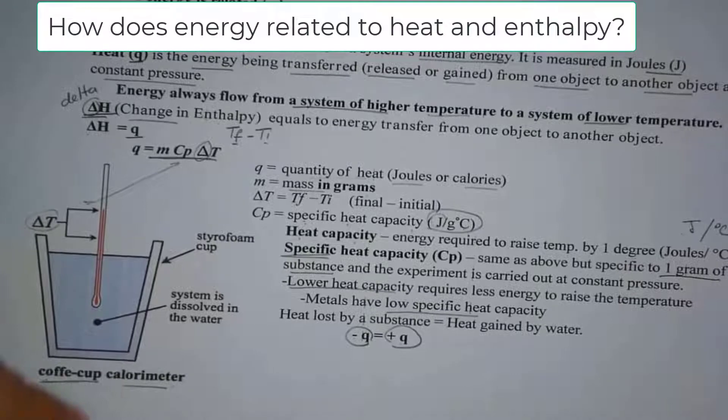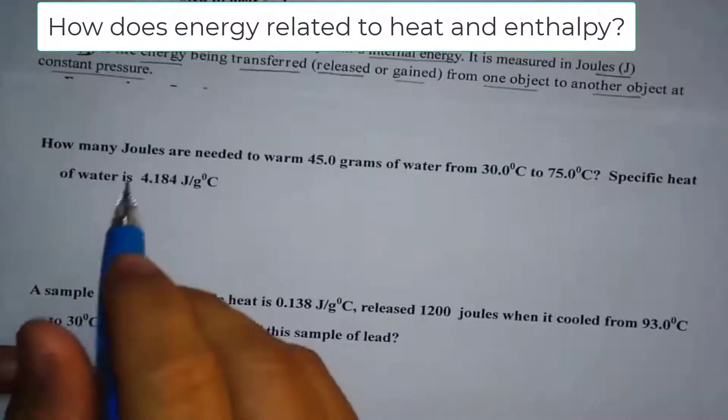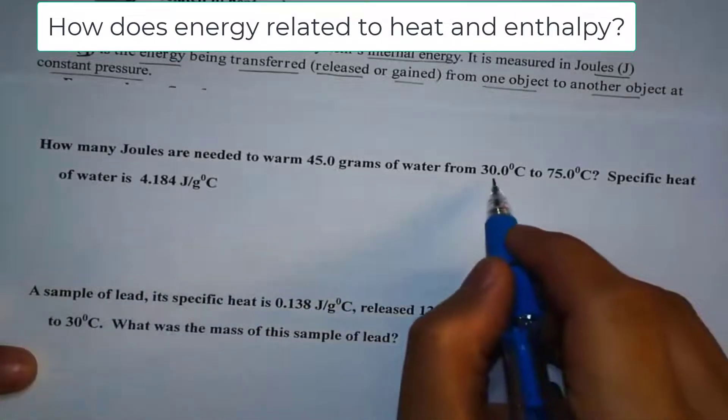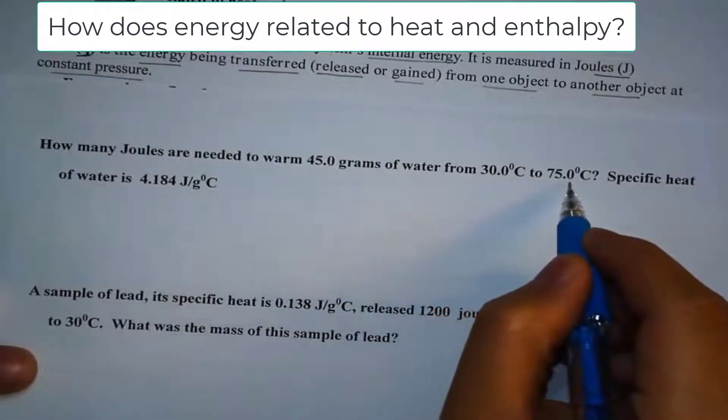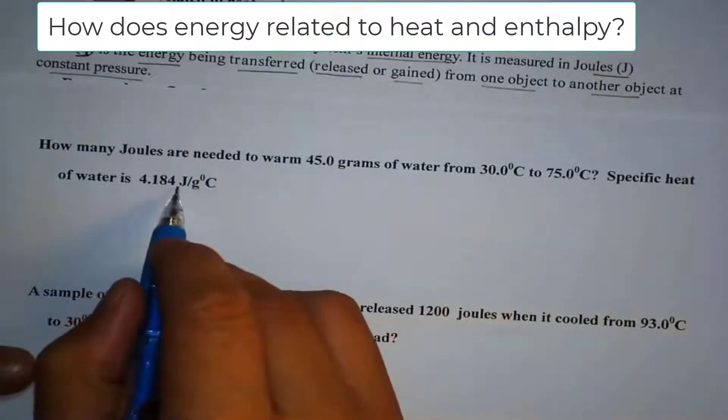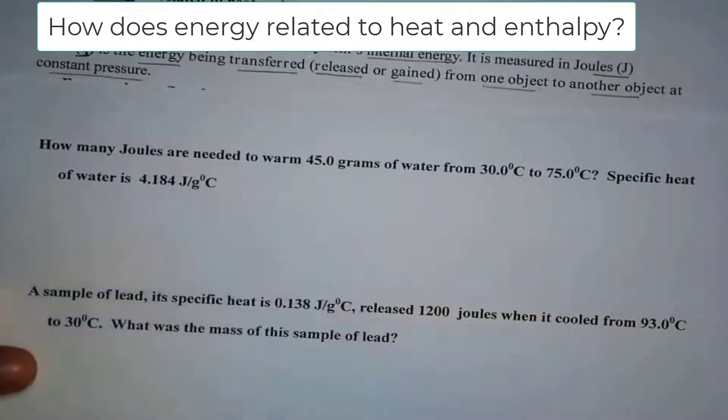Now let's try one problem together. How about that? How many joules are needed to warm 45 grams of water from 30 degrees Celsius to 75 degrees Celsius? The specific heat of water is 4.184 joules per gram Celsius.